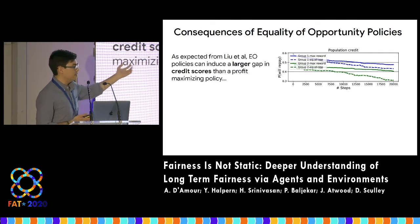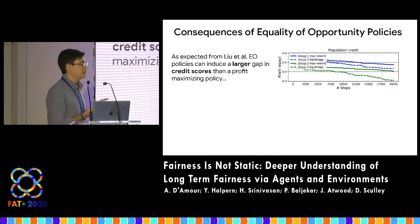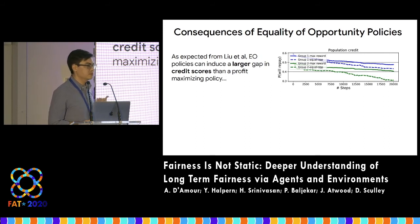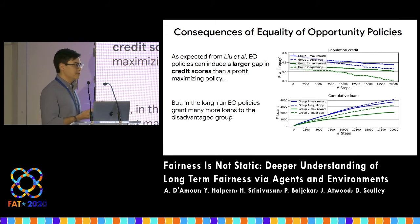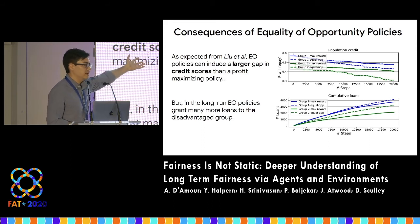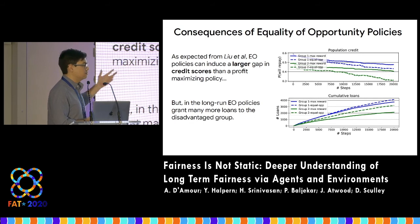What the Delayed Impact paper showed, and what we also found in our simulations, is that there can be unintended consequences to supposedly fair policies. A policy that tries to equalize true positive rates — using a one-step analysis — can end up with gaps in the credit score distribution that are actually much wider than if you use a profit-maximizing unconstrained policy. However, in these simulations we could also examine the cumulative number of loans granted to each group. Here we found that the equality of opportunity policy, which was hurting people from the credit score perspective, was actually really helping the disadvantaged group from the loans-granted perspective. This highlights that the way we measure outcomes really matters in how we evaluate these policies.